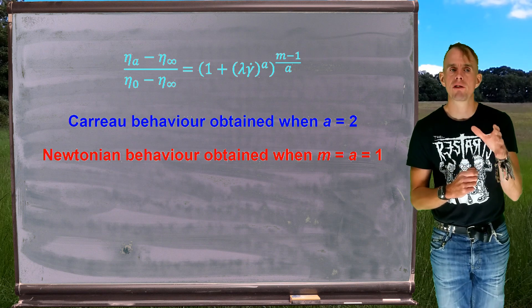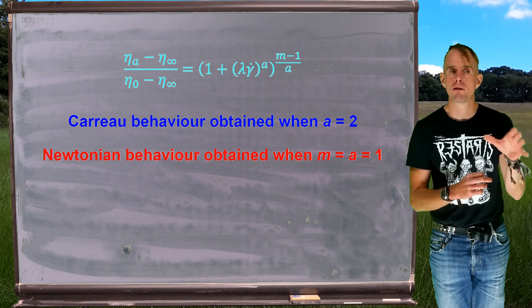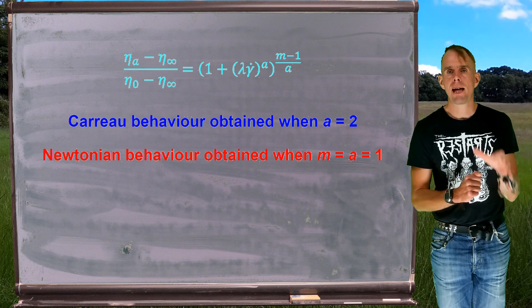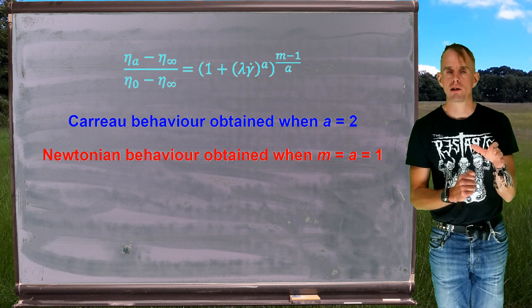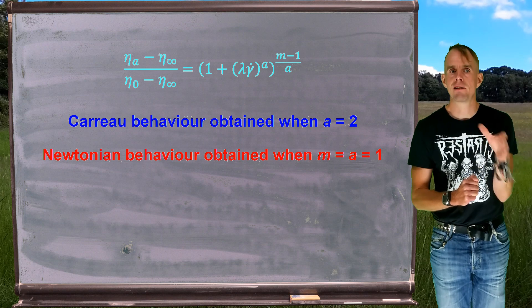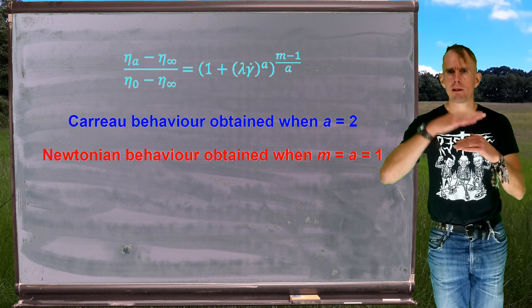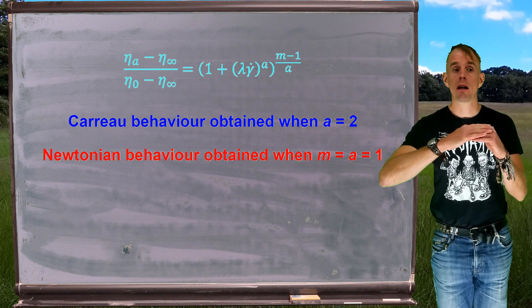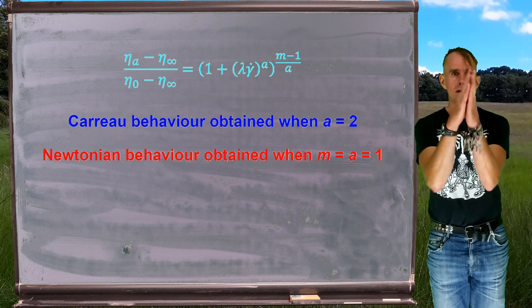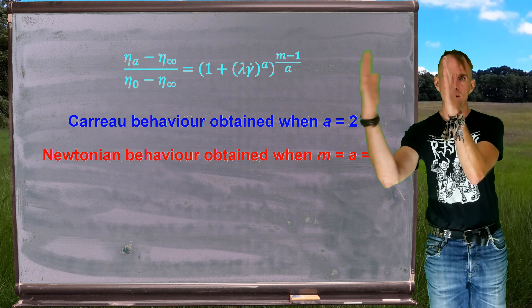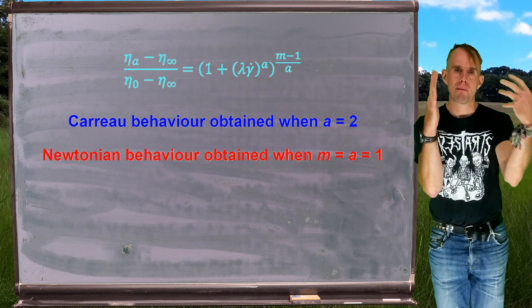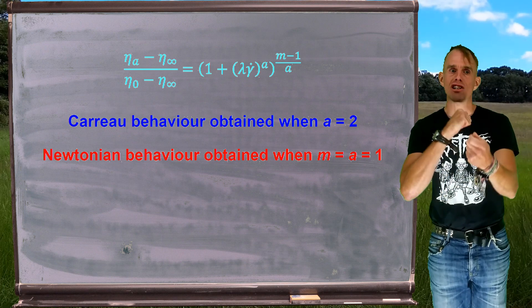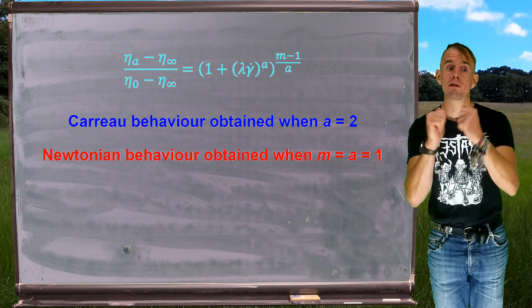Now, just a caution once again about analytical solutions to both the Carreau and the Carreau-Yasuda fluid is that you have to be very careful when using these expressions because you can find that you get bifurcating results. So very carefully choose where your integration limits, especially in pipe flow, lie. Typically, you will integrate over half the flow field. Otherwise, you end up with minus numbers with brackets made to varying powers with the result changing whether that power is positive or negative. So be careful.